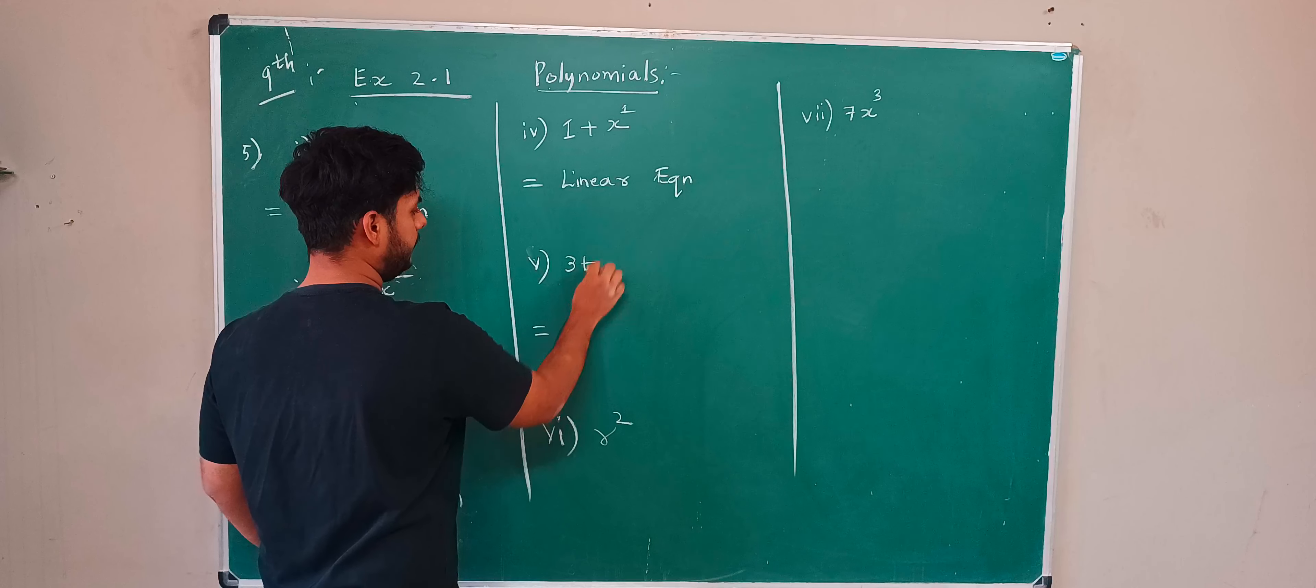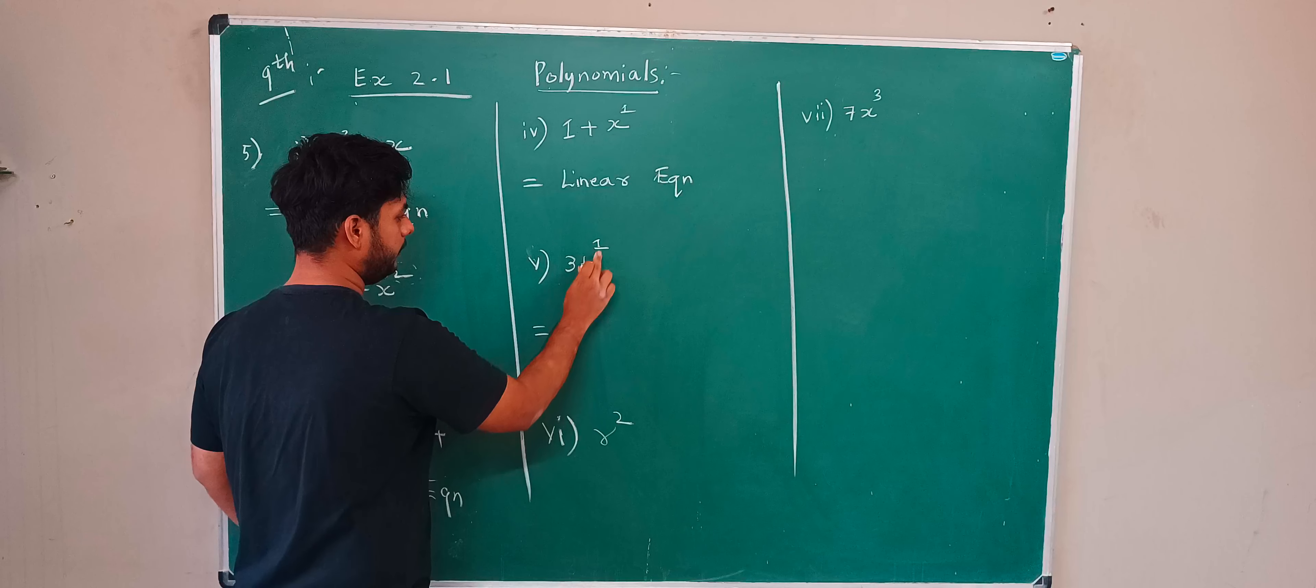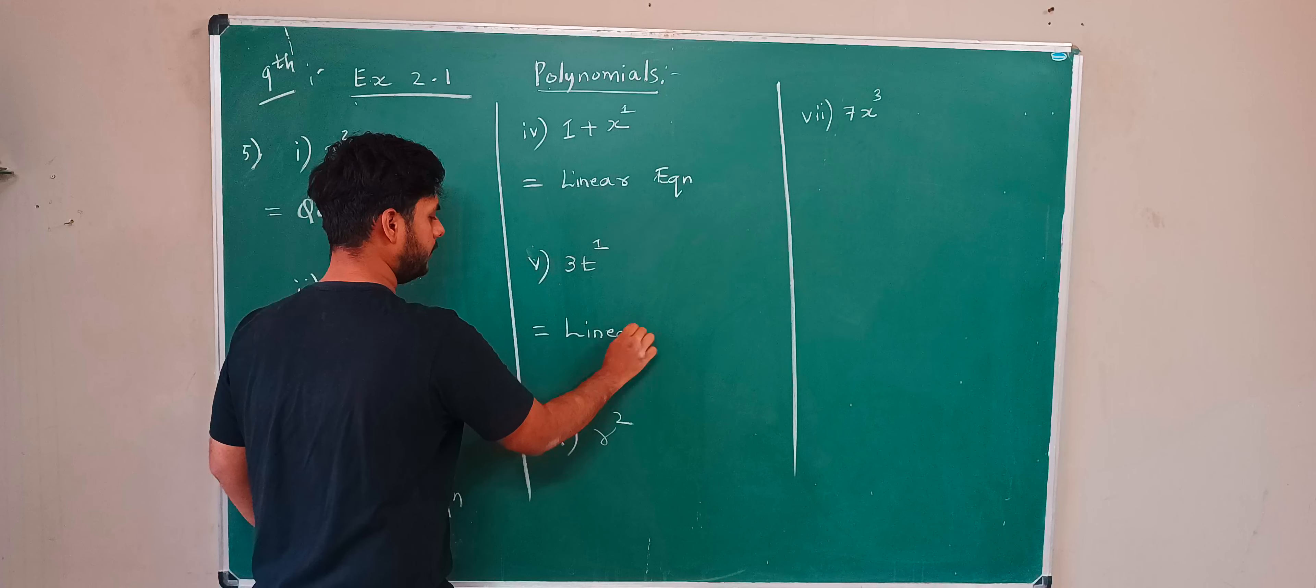Next, 3t. t means t power 1, easy or no? So t, t power 1, 1 means what? It is a linear equation.